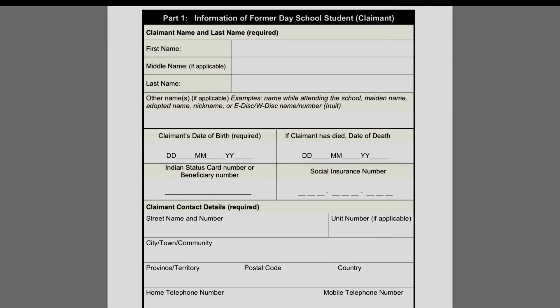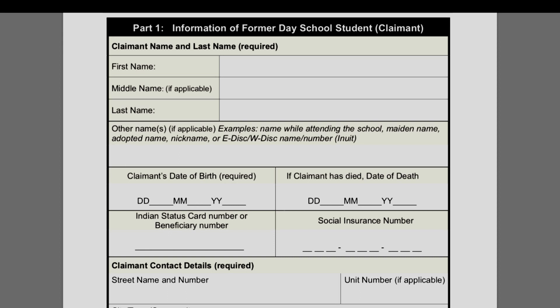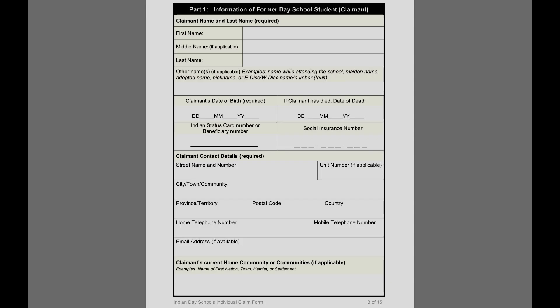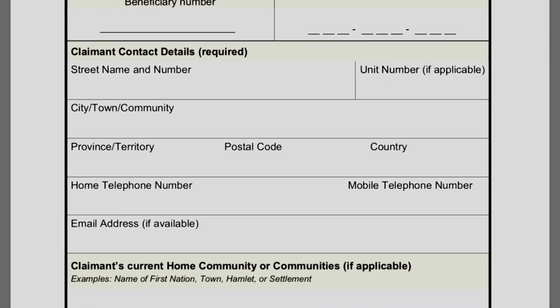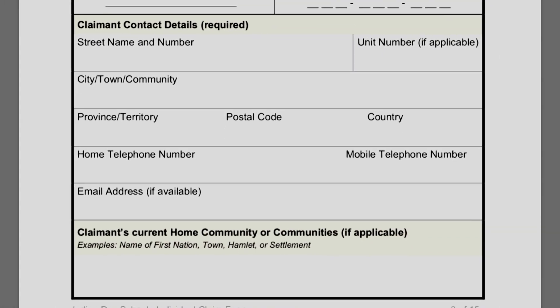In part one, fill out your first name, middle name, and last name. Other names are names you may have gone by at school — you may have had a nickname. This is relevant because other students or friends may only remember you by your nickname, and by providing it, they can cross-reference your story with others from the same school. Provide your date of birth, status card number, and social insurance number. You will need to provide a permanent address where you can be reached, because when the claim money is sent, it will be sent to that address — it will not be direct deposited to your account.